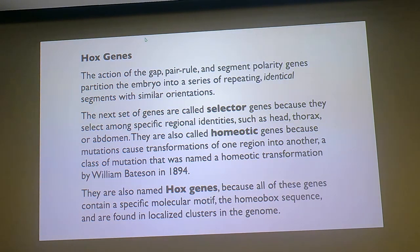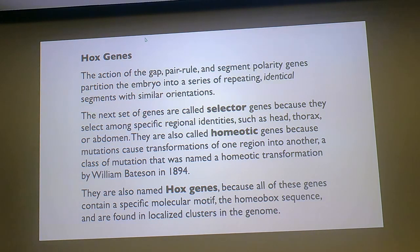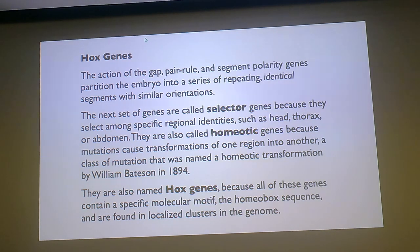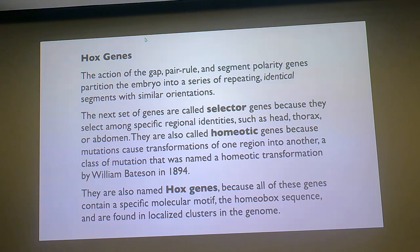So what we've done with the fly so far is we've partitioned it: we set up the bicoid gradient, we set up the gap genes that define broad regions, and we use the gap genes, bicoid, and each other for the pair rule genes to turn themselves into nice stripes. Then we turn on engrailed within each segment so every segment has the same gene turned on. But what this codes for is making a kind of nondescript segmented worm—just a way to make segments over and over again. As you know from looking at flies in the lab, flies have some pretty complicated morphologies: six legs, an abdomen, a head with antennae. How do they do that?